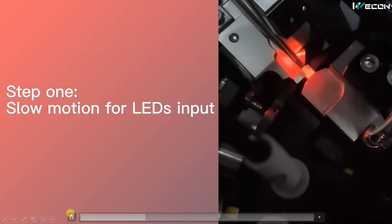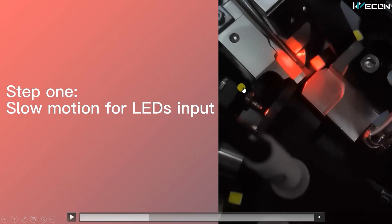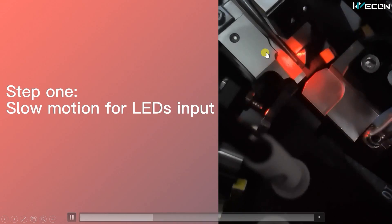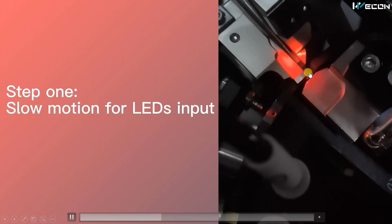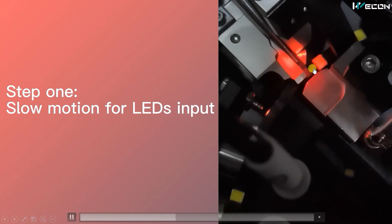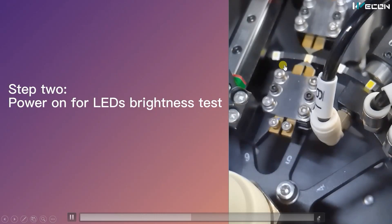Now we are going to see the operation of this machine in slow motion. First, the LEDs are injected — from the vibrator drum, LEDs come to the conveyor, and from the conveyor they are injected into the rotary table. This is the path from where the LEDs are injected. Observe: the LED comes exactly at this slot, and after that it moves. There is also a sensor — when an LED comes, the table rotates.